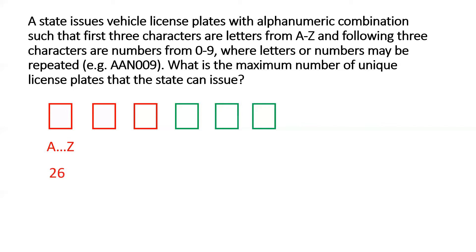For the second placeholder, we can also fill it up by any one of the letters from A to Z, because the problem states that repetition of characters is allowed. So if any one letter was used in the first placeholder, that same letter can potentially be used in the second placeholder as well. That's why all letters from A to Z are still under consideration. So for each way of filling up the first placeholder, we can fill up the second in 26 ways, giving 26 multiplied by 26.